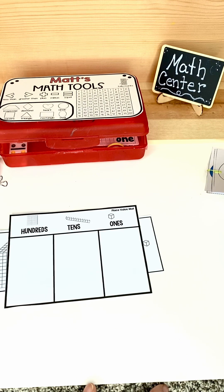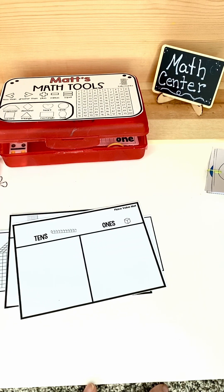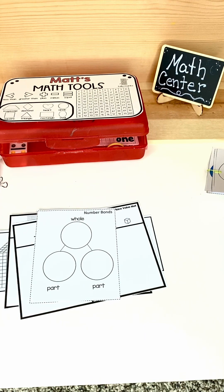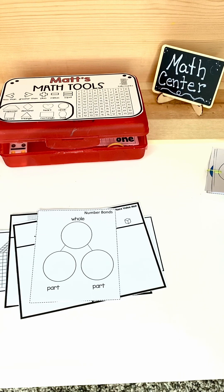Here's a place value mat for hundreds, tens, ones, or you could just do tens and ones. Here is your number bonds, whole, part, part. Students can write the number inside of the whole and then pull them apart.